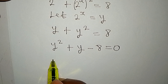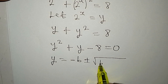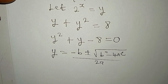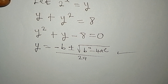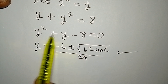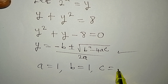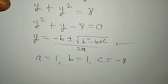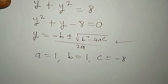Let's use the quadratic formula to solve this. y equals minus b plus or minus square root of b squared minus 4ac, all over 2a. Once you know this formula, there is no quadratic equation you won't be able to solve. From our equation, a is 1, b is 1, and c is minus 8.